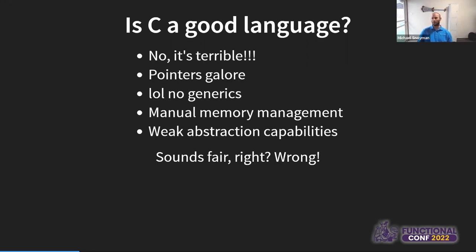Functional programmers love generics. Manual memory management is something that silly people write, because all of us use garbage collection these days, and that's obviously better. And C has, relatively speaking, very weak abstraction capabilities. I think many of us would say this is a fair assessment of the C programming language — but I'm going to tell you, we're all wrong.